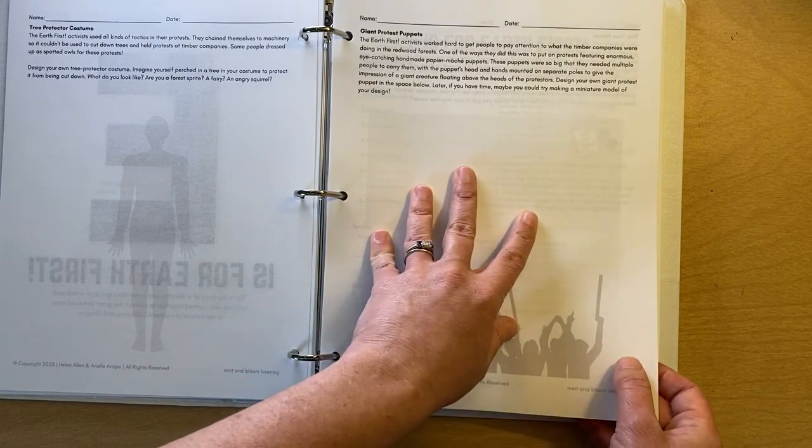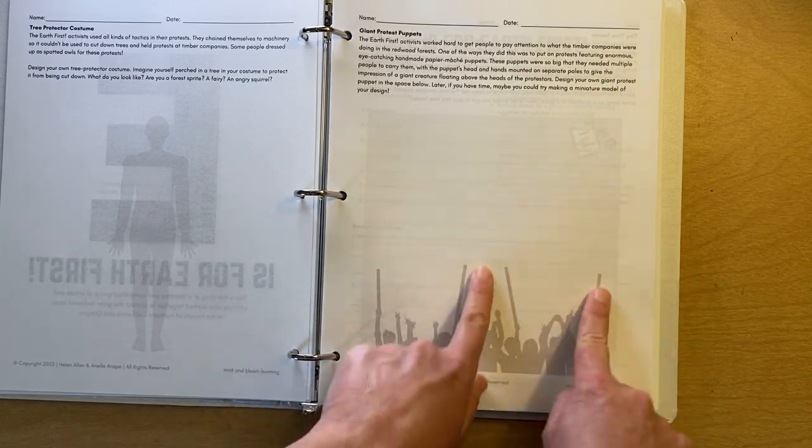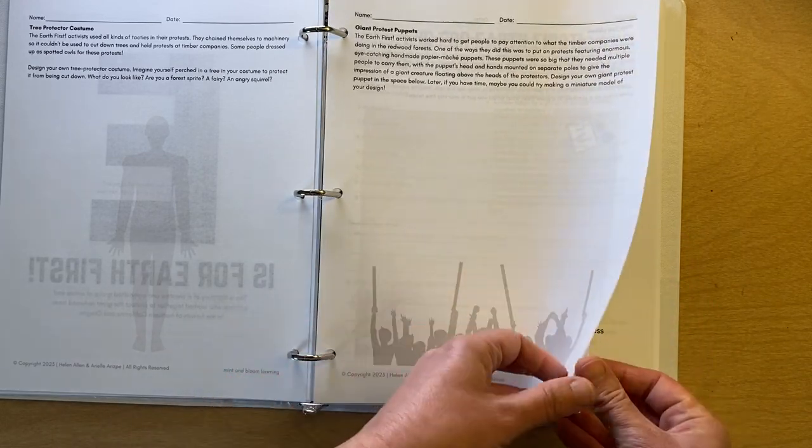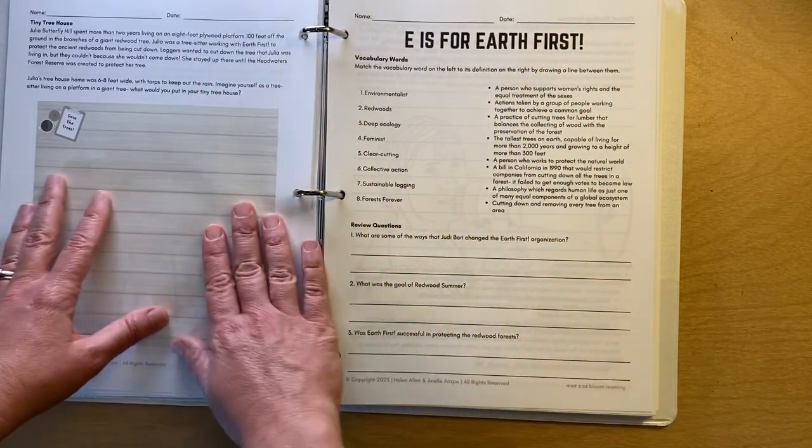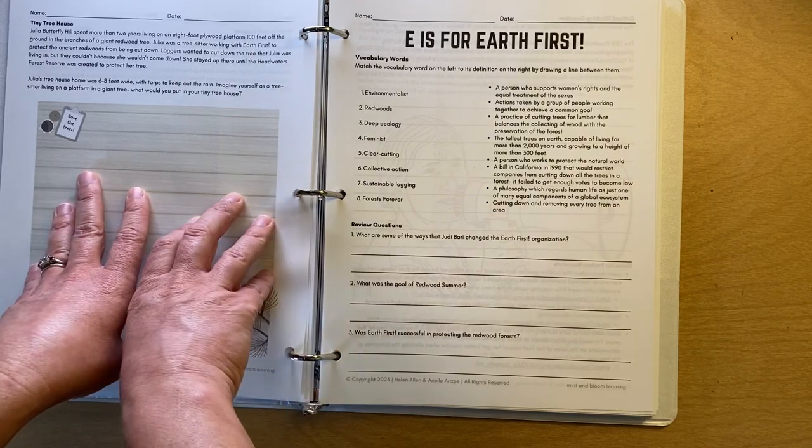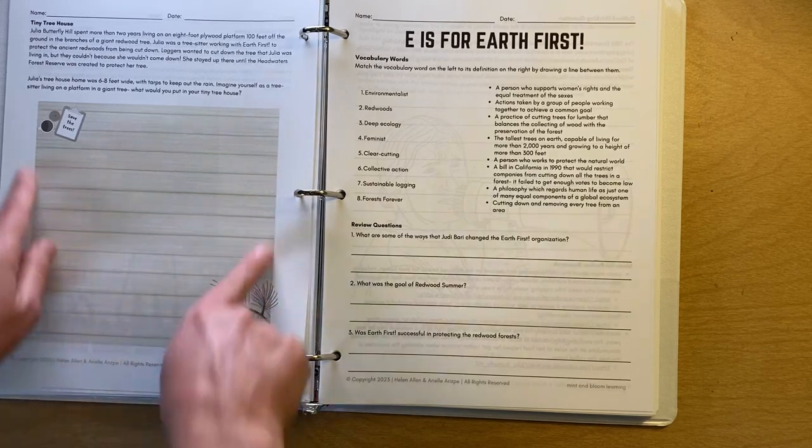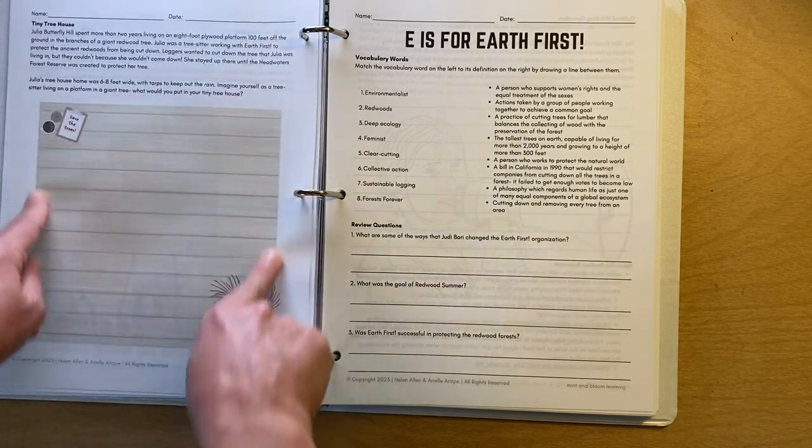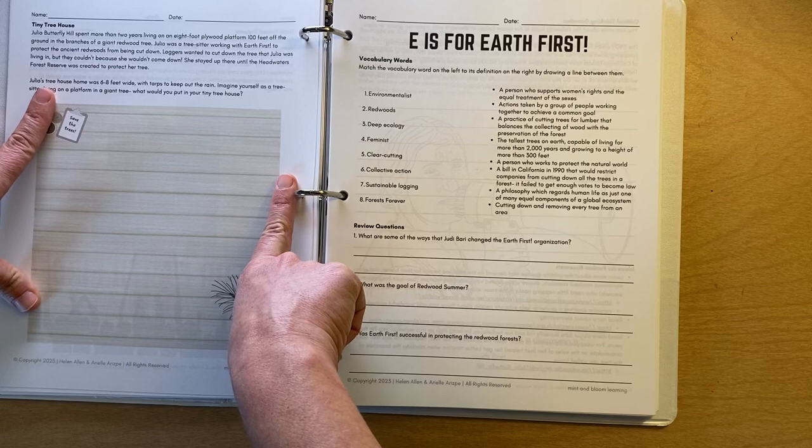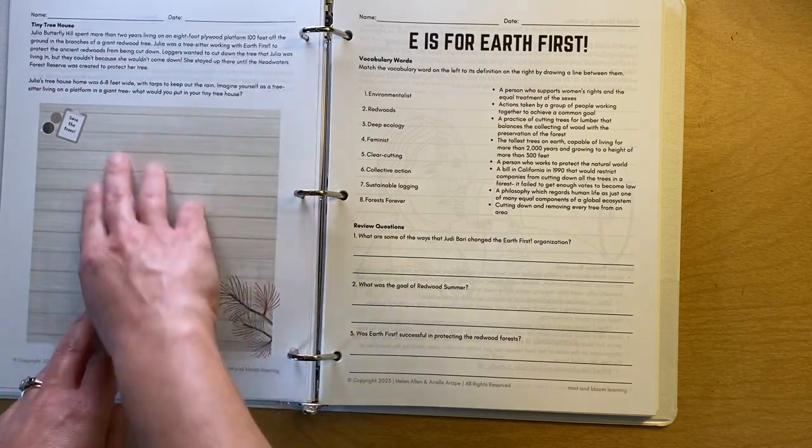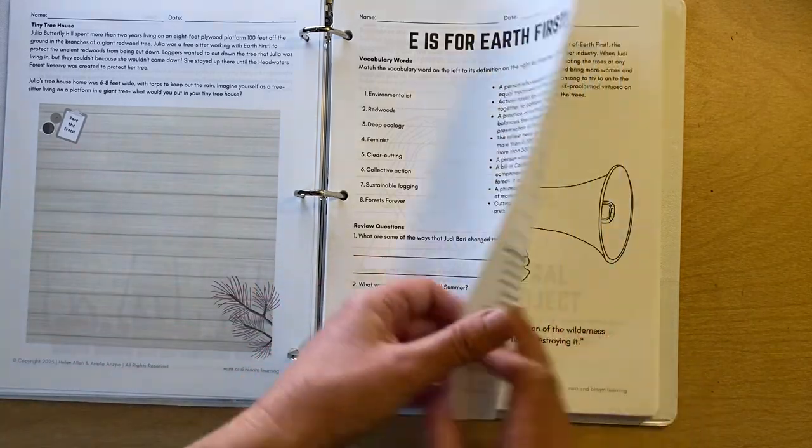We have a, they would use giant protest puppets. So you can make a big giant design of a puppet that's on sticks held up by a whole crowd of people that would float above the protesters heads. We learn about Julia Butterfly Hill, who lived a hundred feet up in one of the redwoods to keep it from being cut down. And she lived on a little wooden, eight foot wooden plywood platform in the tree. So if you were to live in a tiny space, what would you put in it? Would you have a bed? What kinds of things would you want up in your tree house? So this is a top-down view of that. Okay. I'm going to just go through a little quicker if I can.